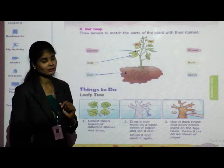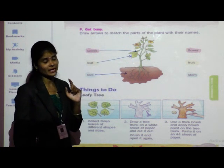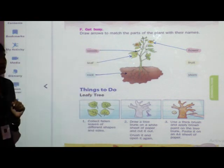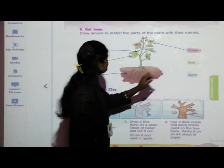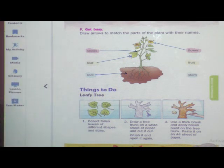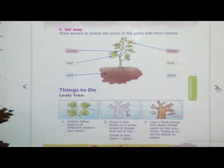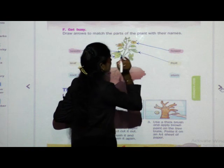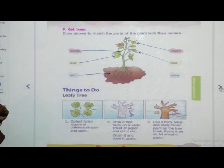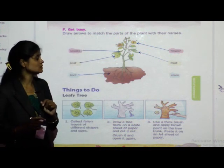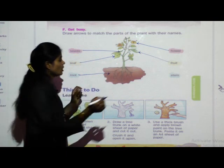Next: flower — F-L-O-W-E-R. Can you see the flower in the picture? There is a yellow-colored flower. Match it. Next: fruit — F-R-U-I-T. Match the fruit of the plant. Next: stem — S-T-E-M. This is the stem of the plant. Match it here.